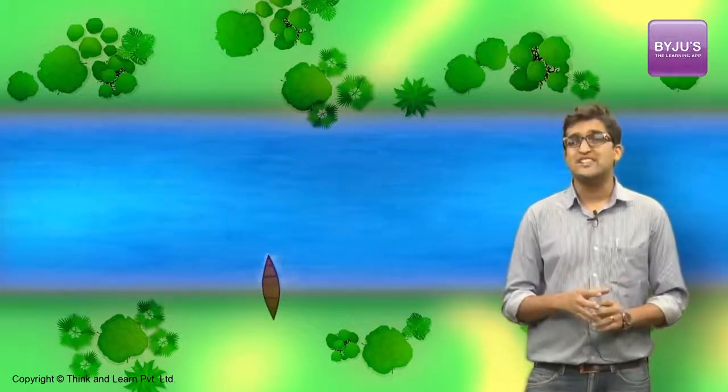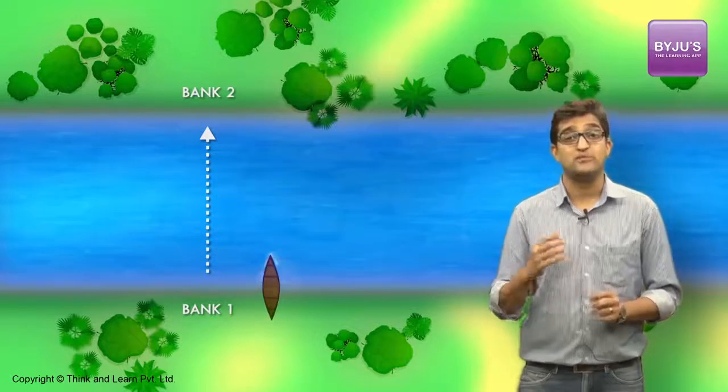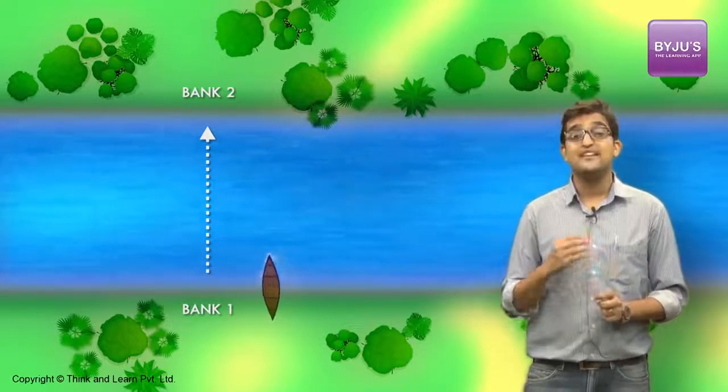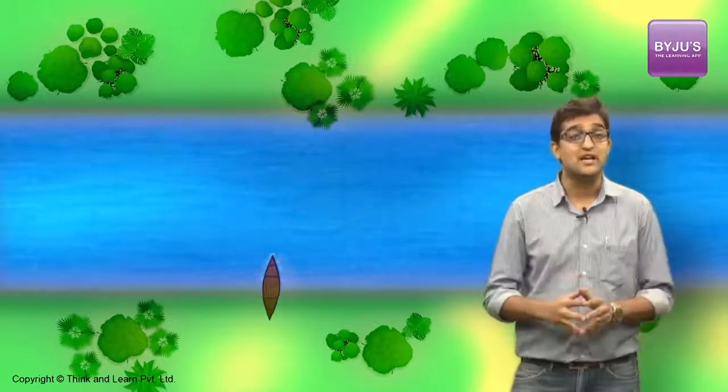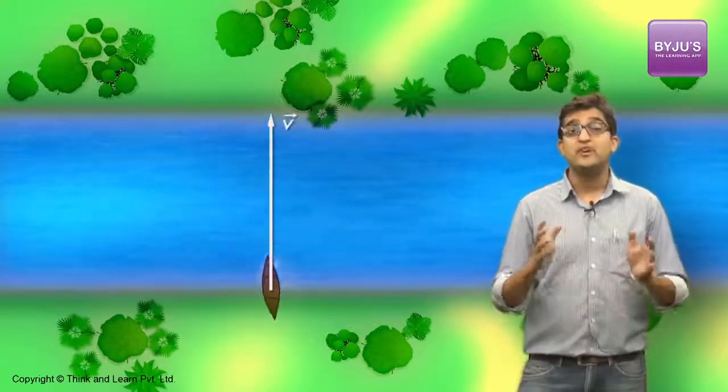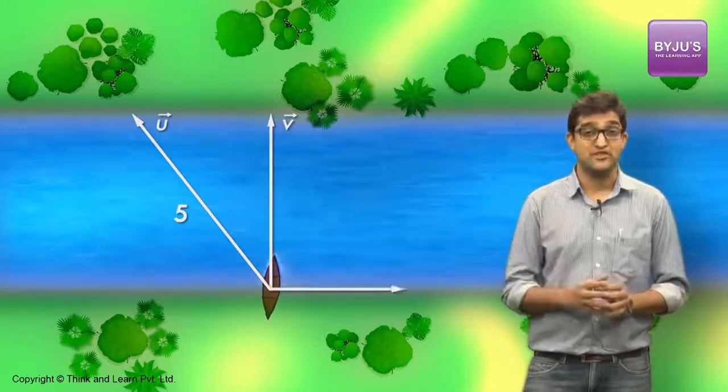The boat wants to cross the river from bank 1 to bank 2 in the shortest possible path, and we are asked to find the speed of the river. Important things you should understand here are that the boat's crossing velocity will be a resultant of its still water speed and the river velocity.